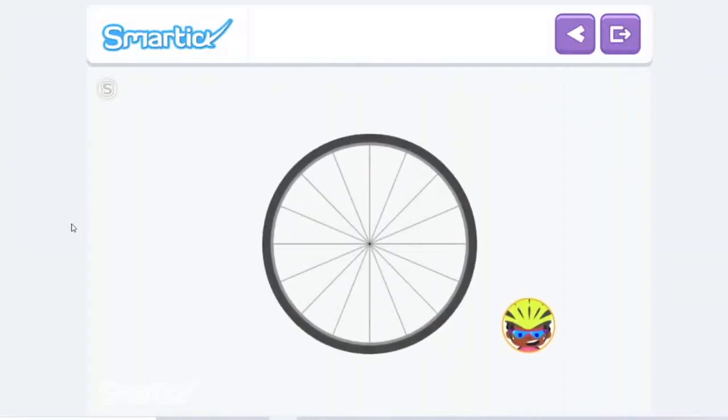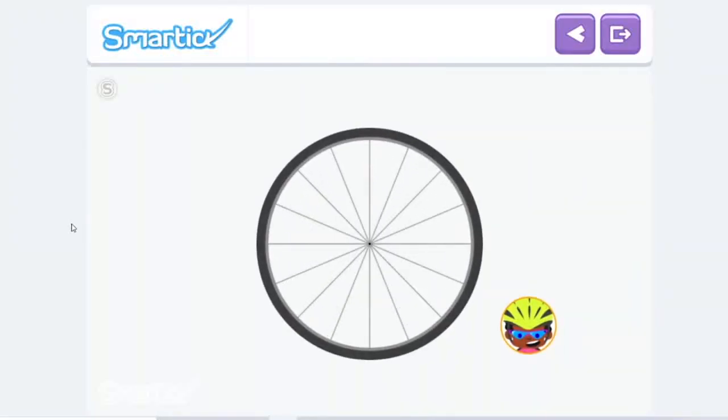First, they take the front wheel off of Zoe's bike and decorate one of the spokes. Then, they put a second decoration on another spoke that forms a right angle with the first. But Zoe does not know how to measure this angle.